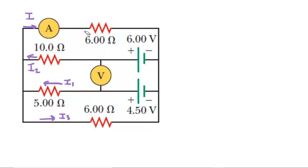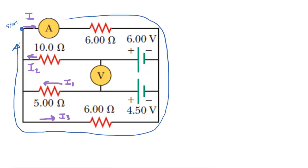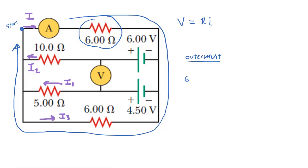Next, we're going to be applying a few loop rules. For the first loop rule, we'll start here and go clockwise all the way around the perimeter of the circuit — the outermost loop. Moving through the ammeter, there's no potential change. We then encounter a six-ohm resistor. The potential change across a resistor is the resistance multiplied by the current, so this would be six I. Since we're traveling in the same direction as the current, we put a negative sign: negative six I.